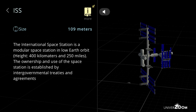ISS, size: 109 meters. The International Space Station is a modular space station in low Earth orbit height, 400 kilometers and 250 miles. The ownership and use of the space station is established by intergovernmental treaties and agreements.